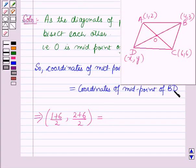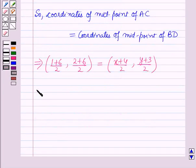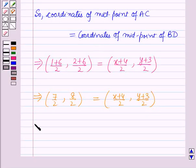Now for finding the coordinates of midpoint of BD, we will consider the point B and D, and by using this, the coordinates of midpoint are (x plus 4 by 2, y plus 3 by 2). This implies 7 by 2 and 8 by 2 equals (x plus 4 by 2, y plus 3 by 2), which further implies 7 by 2 and 4 equals (x plus 4 by 2, y plus 3 by 2).